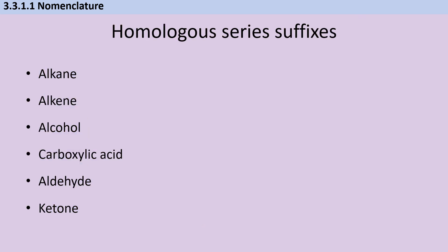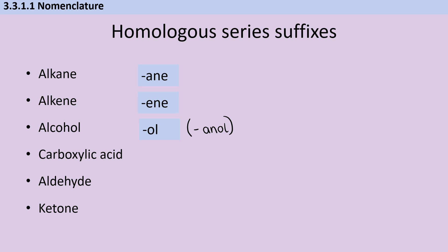We don't just have the prefix, which tells us how many carbons there are — we also have the suffix, which tells us what kind of molecule it is. At GCSE you already met alkanes and alkenes, so you know that the suffix for them is -ane and -ene, giving you ethane or propene. If you took GCSE triple science, you would also have met alcohols and carboxylic acids. The suffix for alcohol is -ol, and since all the alcohols you've met so far are based on an alkane, you've always used -anol, as in ethanol. The -an comes before it because we're working from the basis of an alkane. You will encounter some alcohols not based on an alkane, in which case you might have a suffix like -enol if it's based on an alkene.